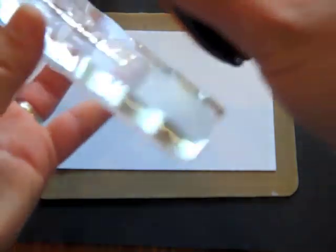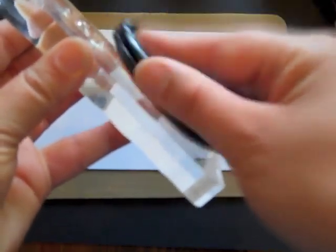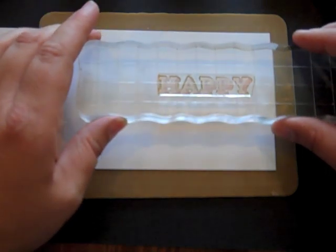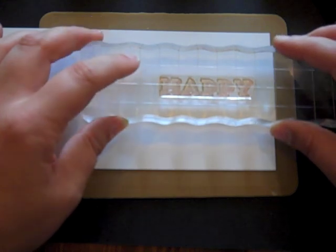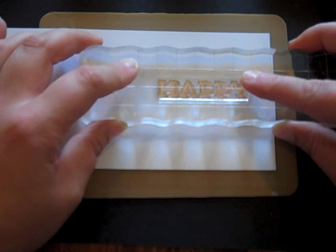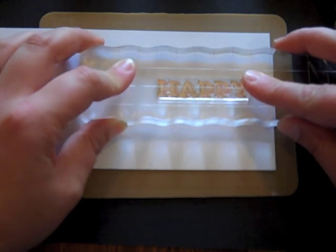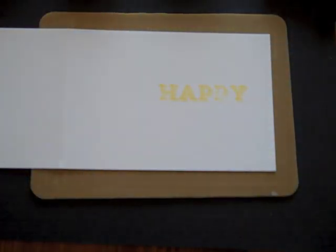I'm going to start with Harvest Gold ink and I like to do several light taps when applying ink to a stamp. It gets a little bit better ink distribution and helps eliminate splotches and that sort of thing. I'm going to put this about the middle and there's the happy.